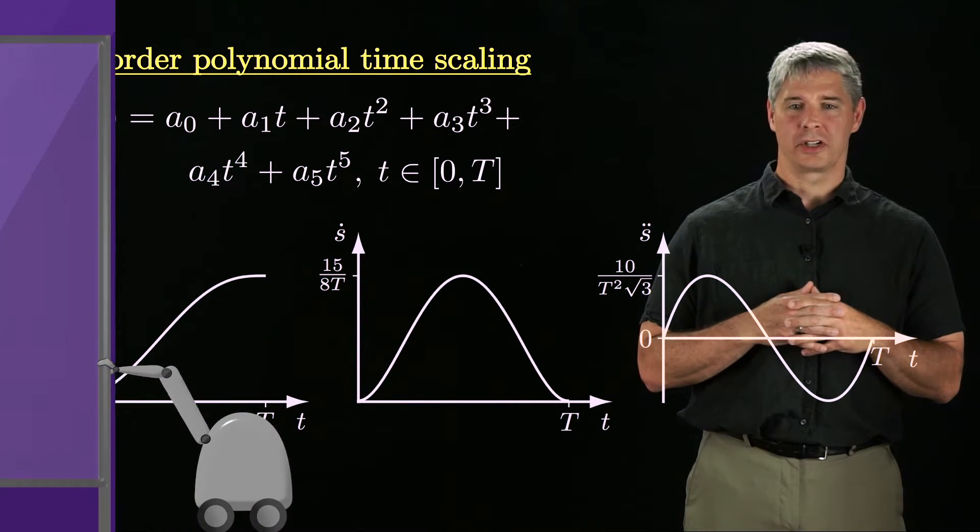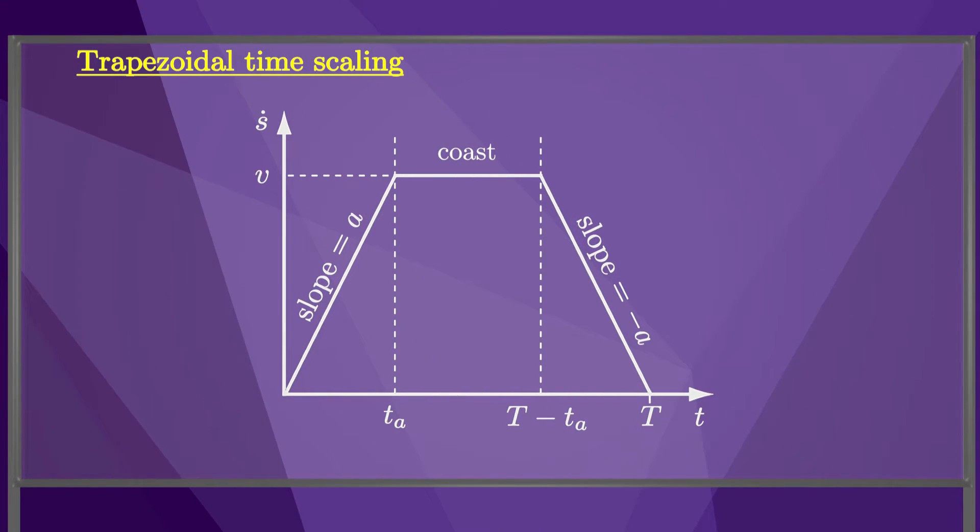Another popular time scaling in motion control is the trapezoidal time scaling, named for its s dot plot, shown here. First the robot follows a constant acceleration, s double-dot, then it coasts at a constant s-dot, then it follows a constant deceleration to rest. Like the third-order polynomial time scaling, this time scaling has discontinuous jumps in the acceleration.